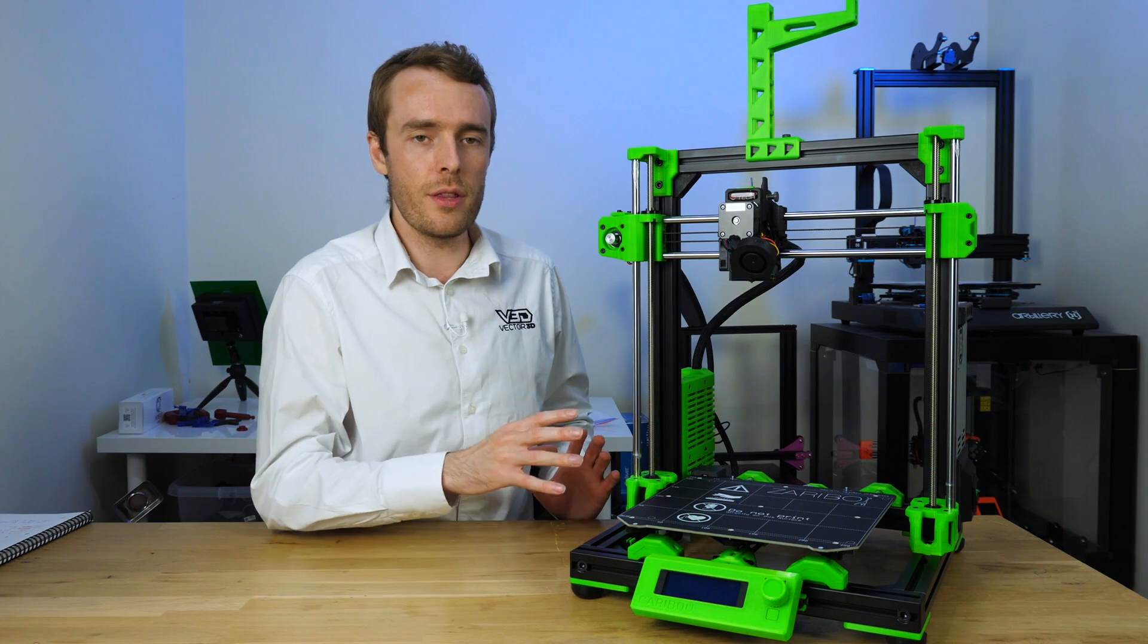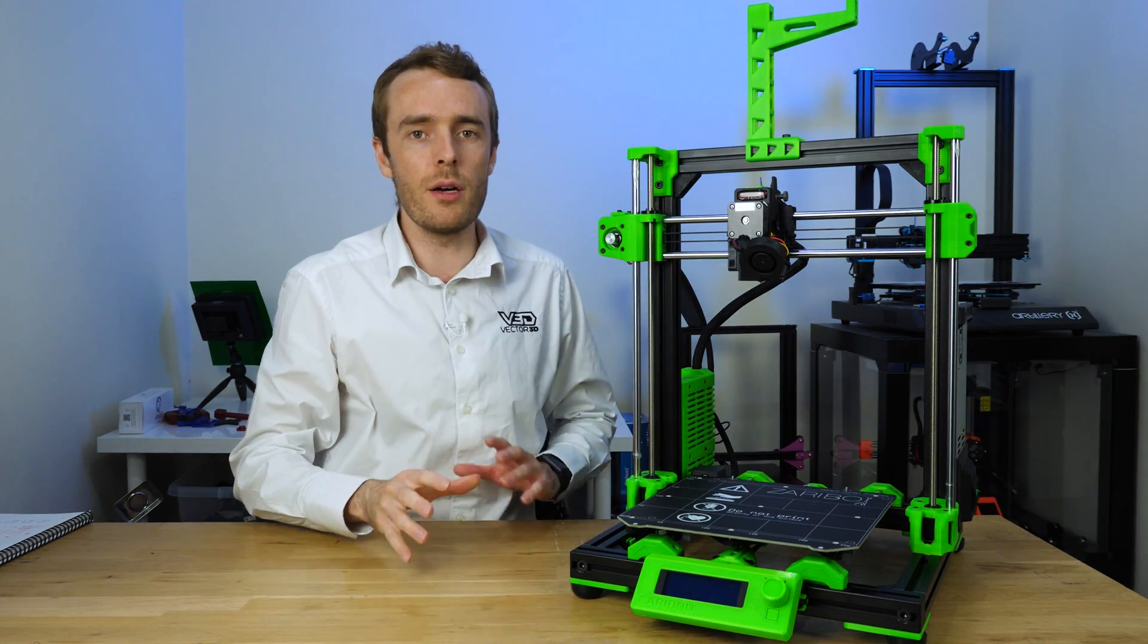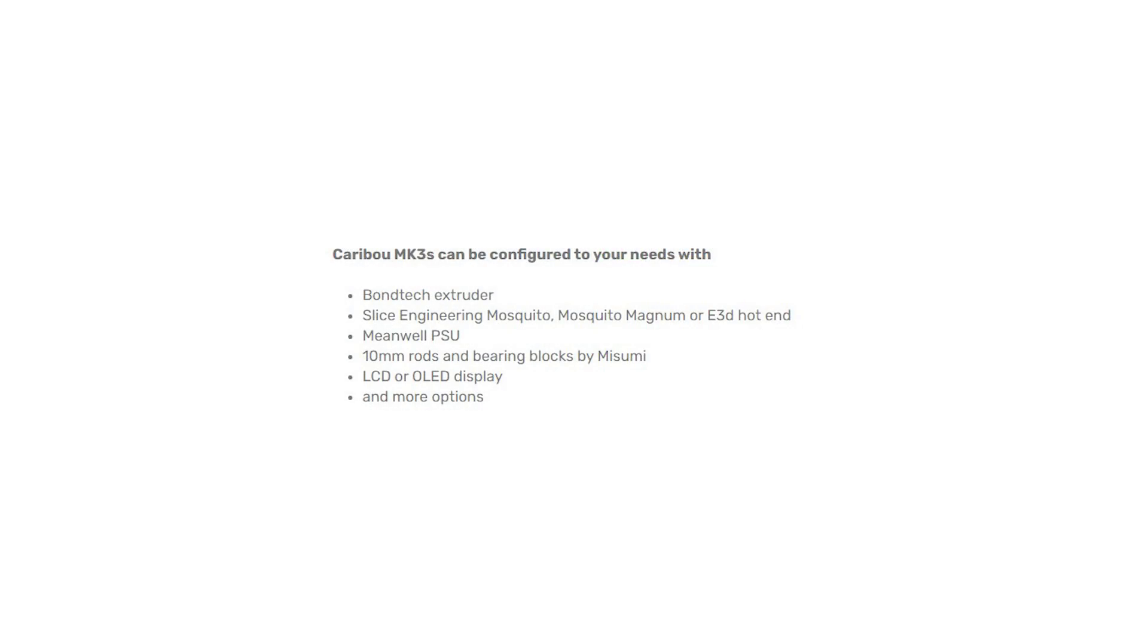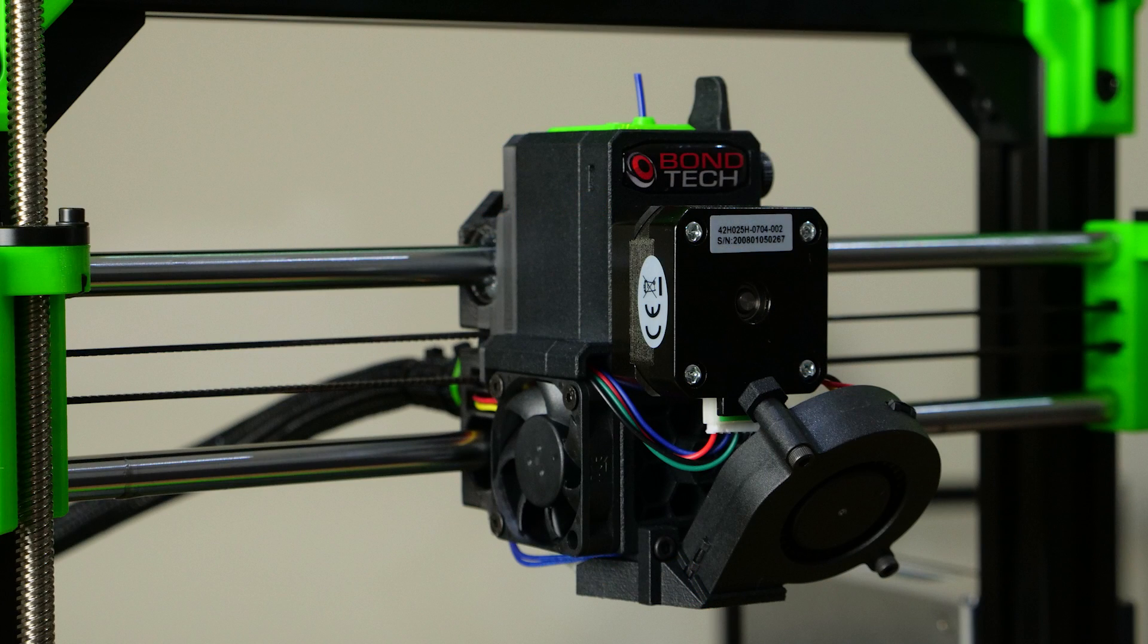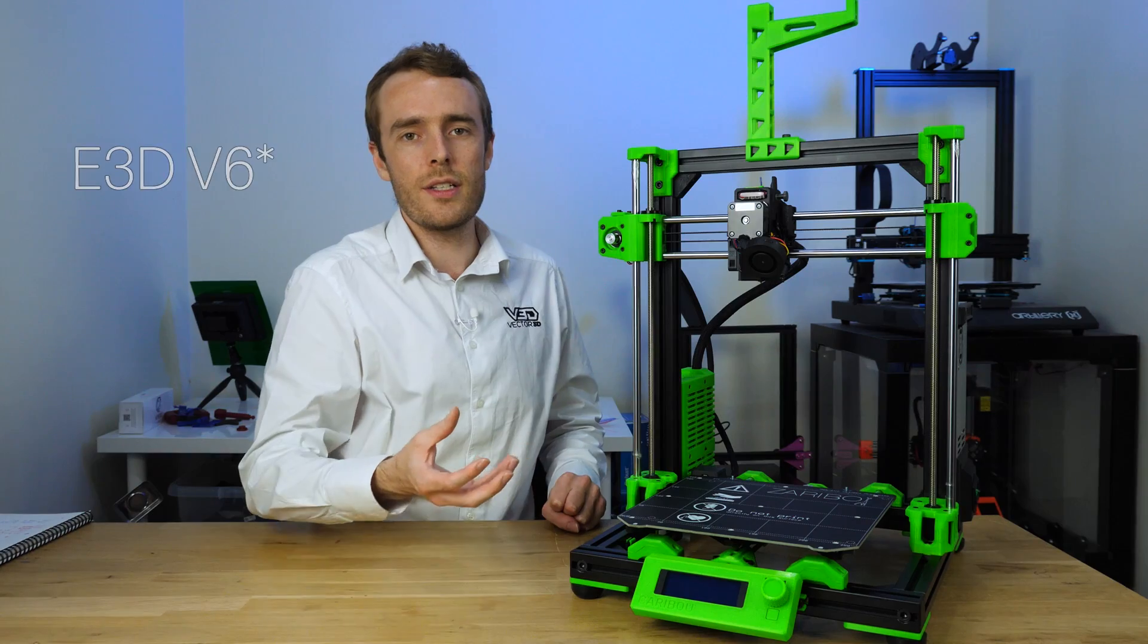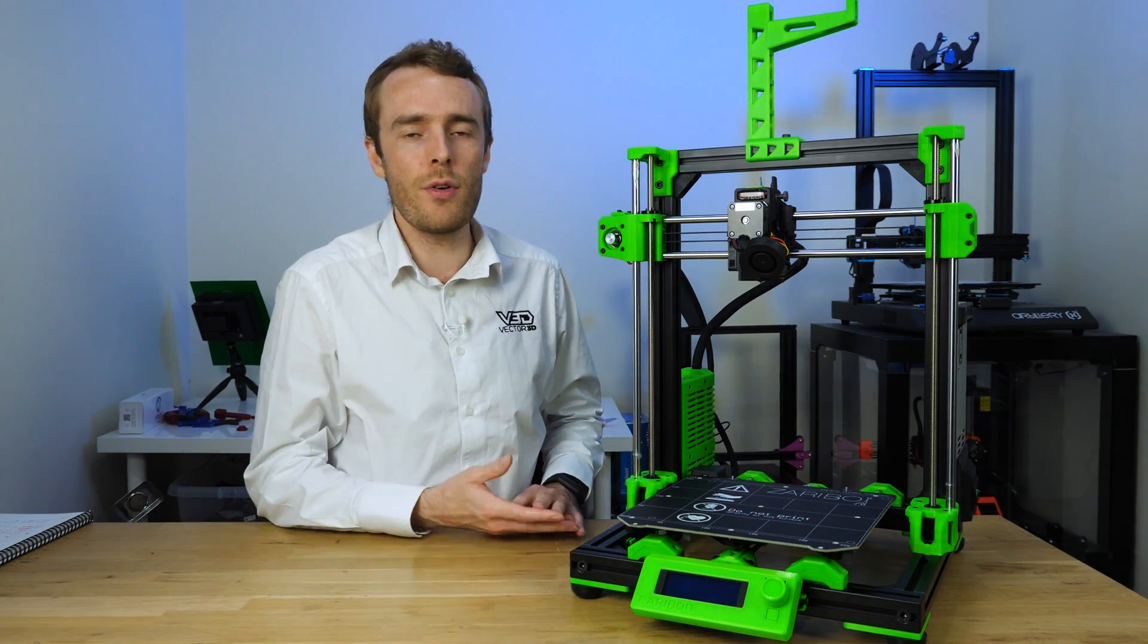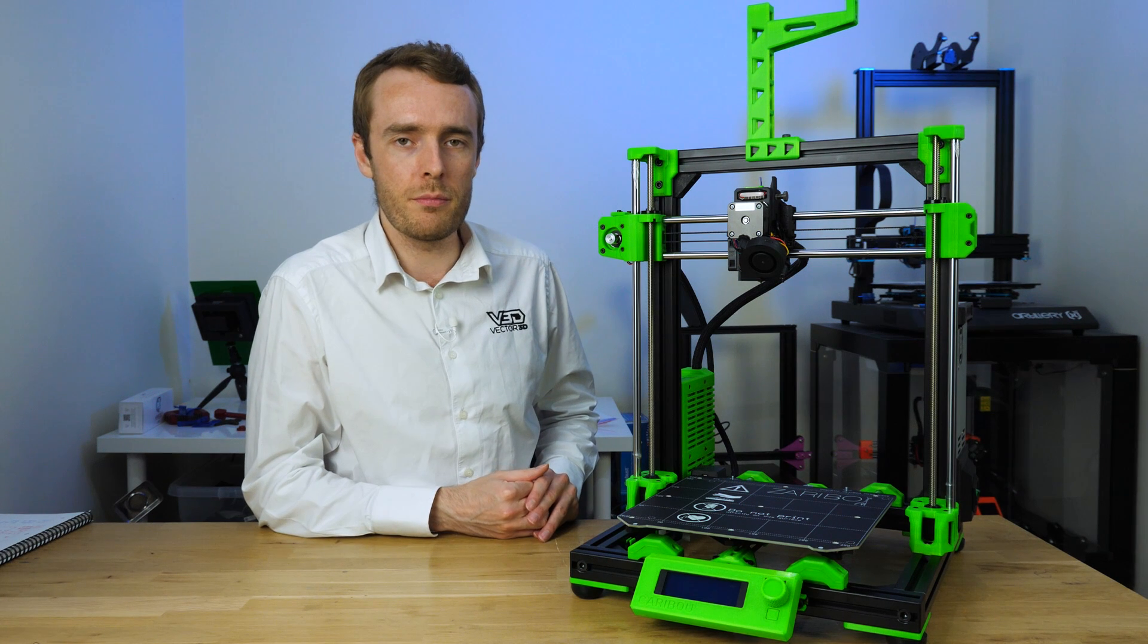The last major difference between this and the original Prusa design is the extruder. Caribou can come with a number of different hotends, E3D as well as Mosquito, but there's also a Bondtech extruder instead of the standard Prusa design. This gives you full 3 to 1 gear ratio, allows for a smaller stepper motor which allows for lighter overall extruder design. The standard E3D V6 is utilized here so there's not necessarily a significant increase in flow rate or anything like that, but you should maintain very similar performance between the two.